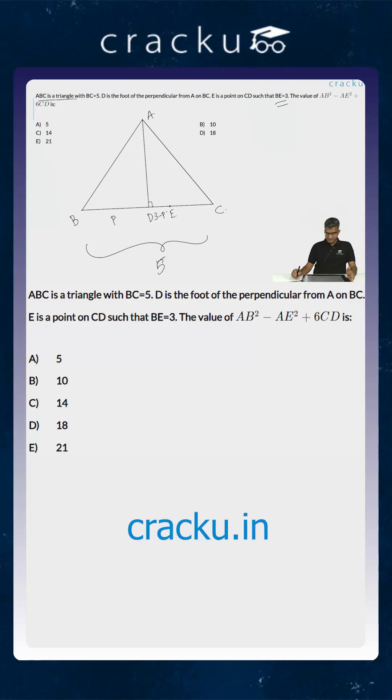So now we can actually calculate the length of CA. CA will definitely be equal to 2. Why is CA equal to 2? Because BE we are told is equal to 3.